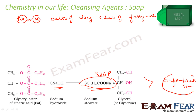In saponification, the esters of fatty acids are hydrolyzed. The soap is obtained in colloidal form only. To extract the soap out, you react with NaCl — the moment you add NaCl, the soap comes out.